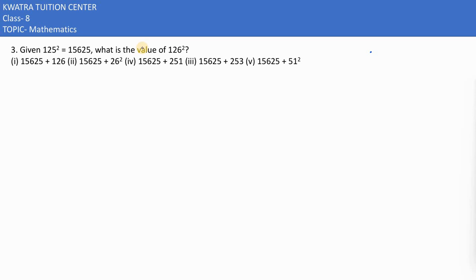Now the next one, the third one. It is given that 125 whole square is equal to 15625, and I need to find the value of 126 whole square. 126 can be formed as 125 plus 1, so 126 whole square equals 125 plus 1 whole square. Two numbers are there with a square on top.